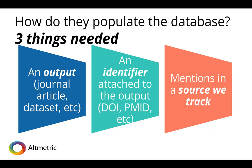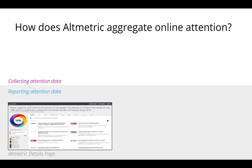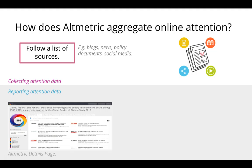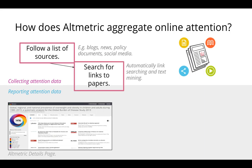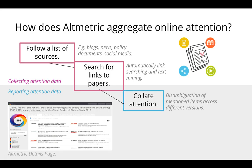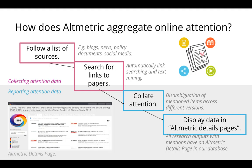How do they populate the database? For the altmetric tool, altmetric.com, you need an output such as a journal article or data set. This needs an identifier attached to the output — a DOI (digital object identifier), a PubMed ID, etc. As long as there is an identifier, it can be tracked. Altmetrics will then track the source of these mentions. It follows a list of sources including blogs, news, policy documents, and social media. It searches for links to the papers, text-mining to find mentions, collates all this attention across different platforms, and displays it in the altmetric display pages.